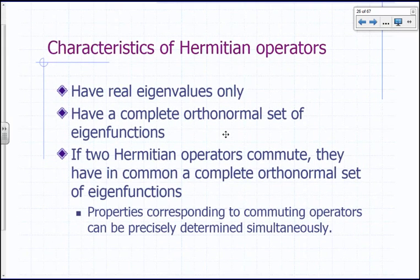What are the characteristics of Hermitian operators and why do we care? We postulate that Hermitian operators give us a way to extract values of physical properties of a system, and those properties must be real numbers. The key property is that Hermitian operators have real eigenvalues, so the possible measurement outcomes are eigenvalues of a Hermitian operator.